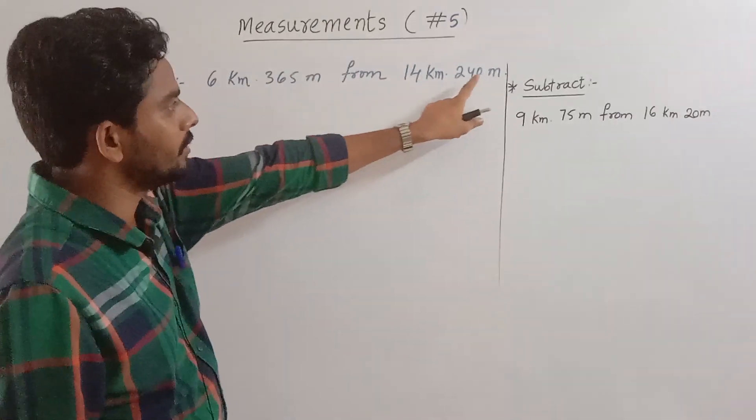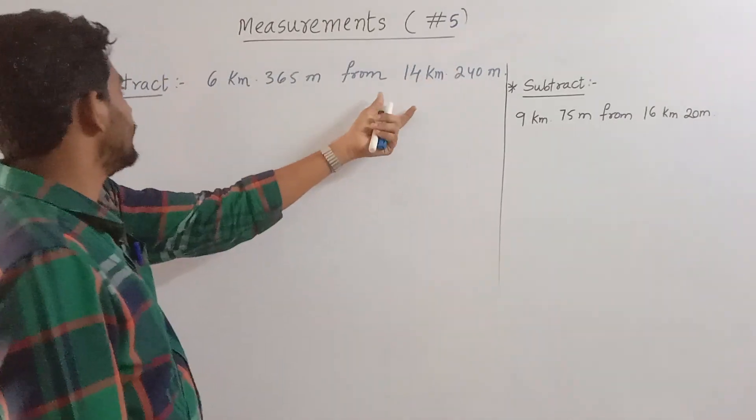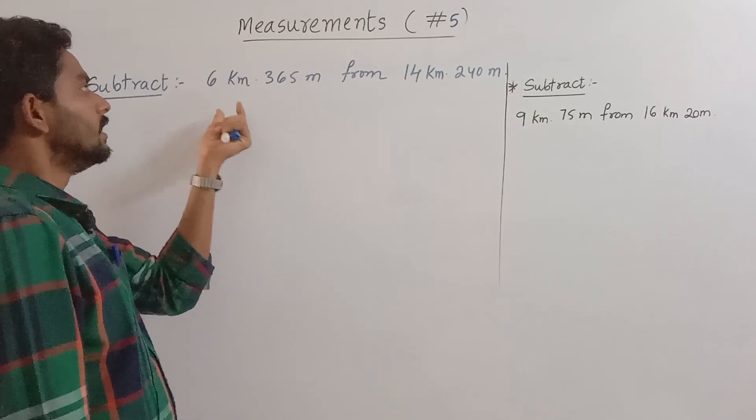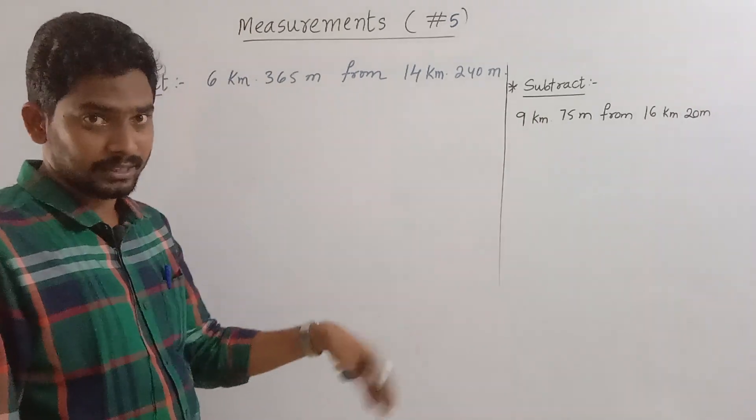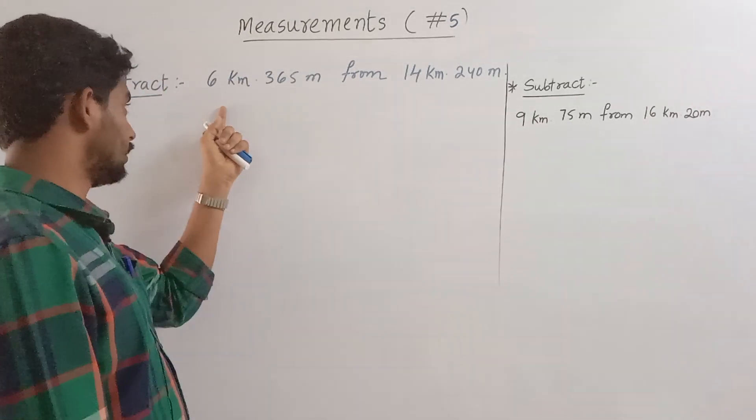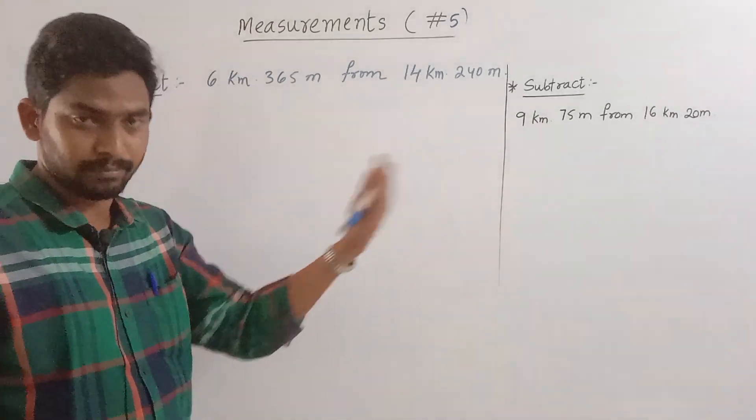We will subtract from 14 km and 240 m. We will subtract 6 km and 365 m.